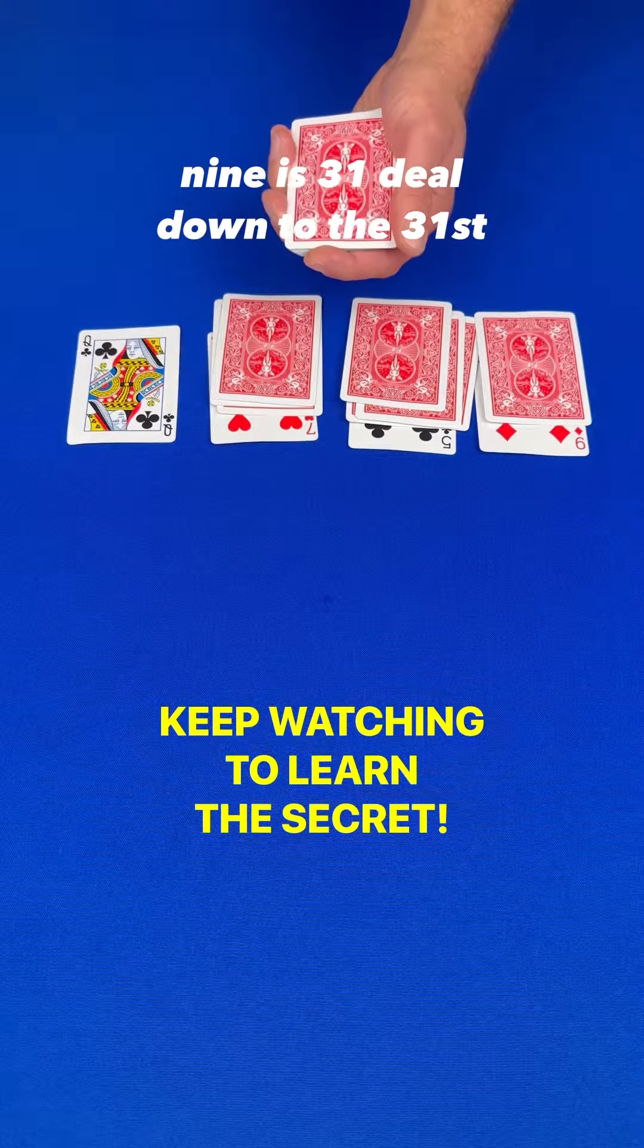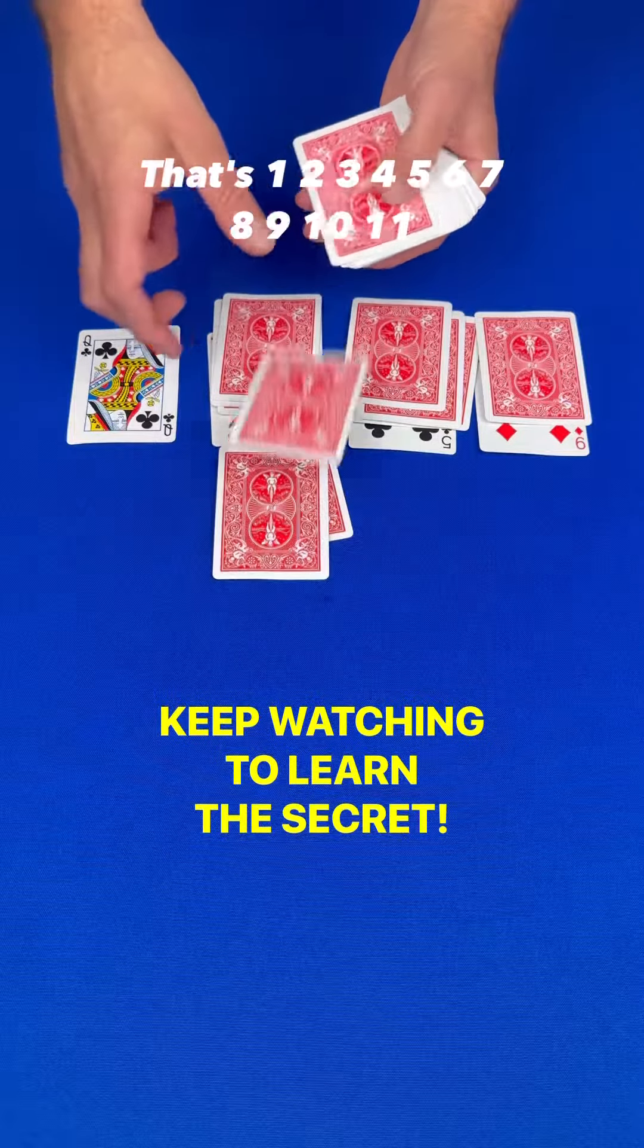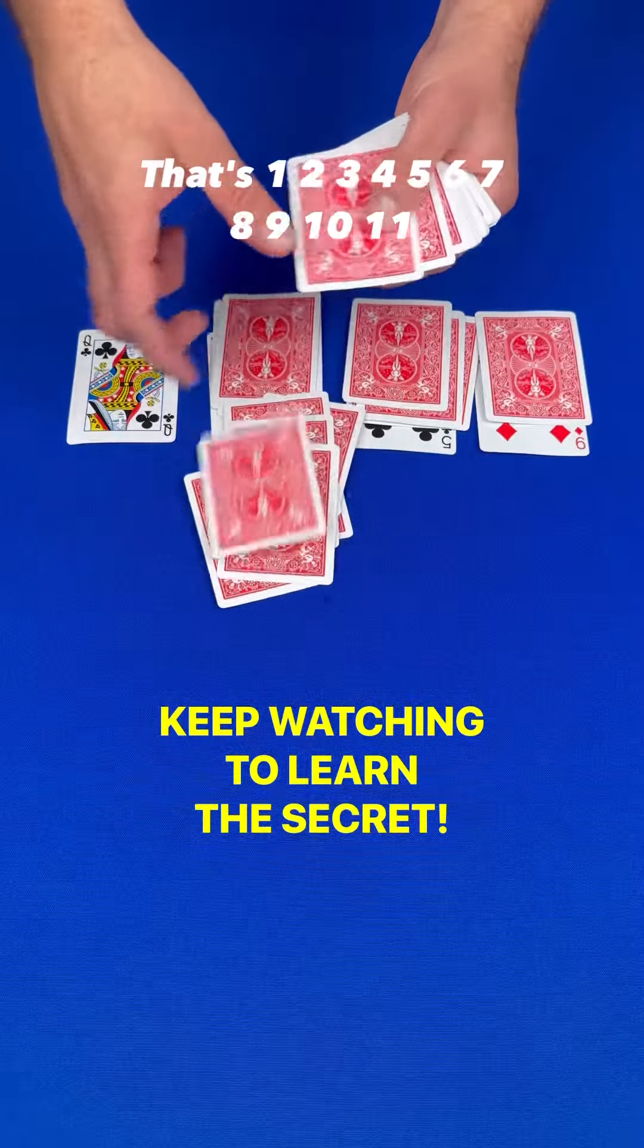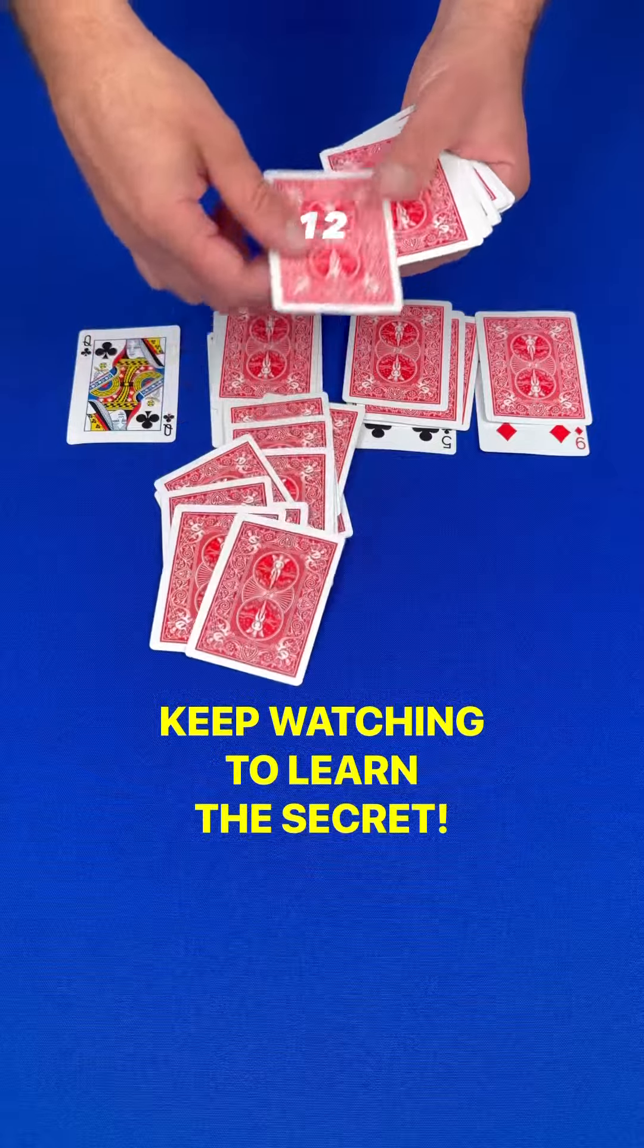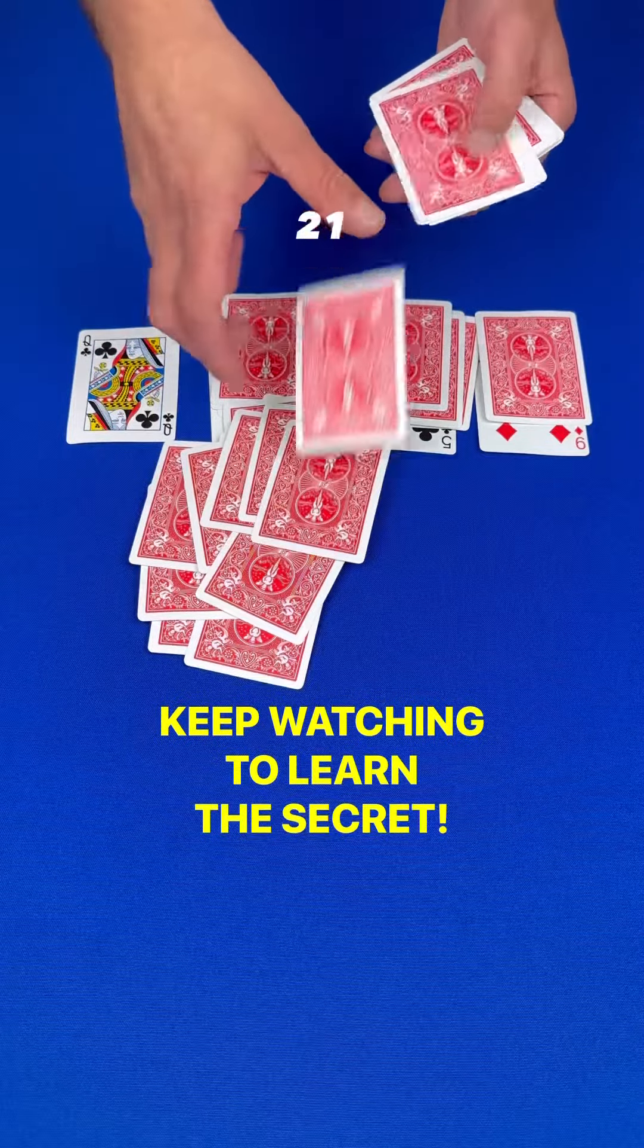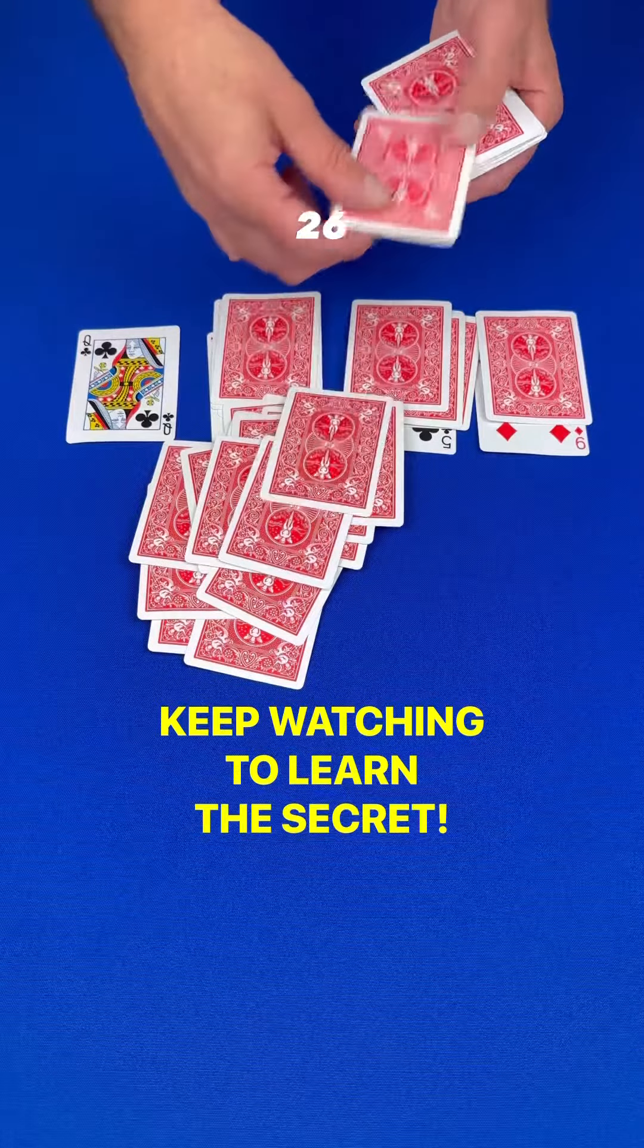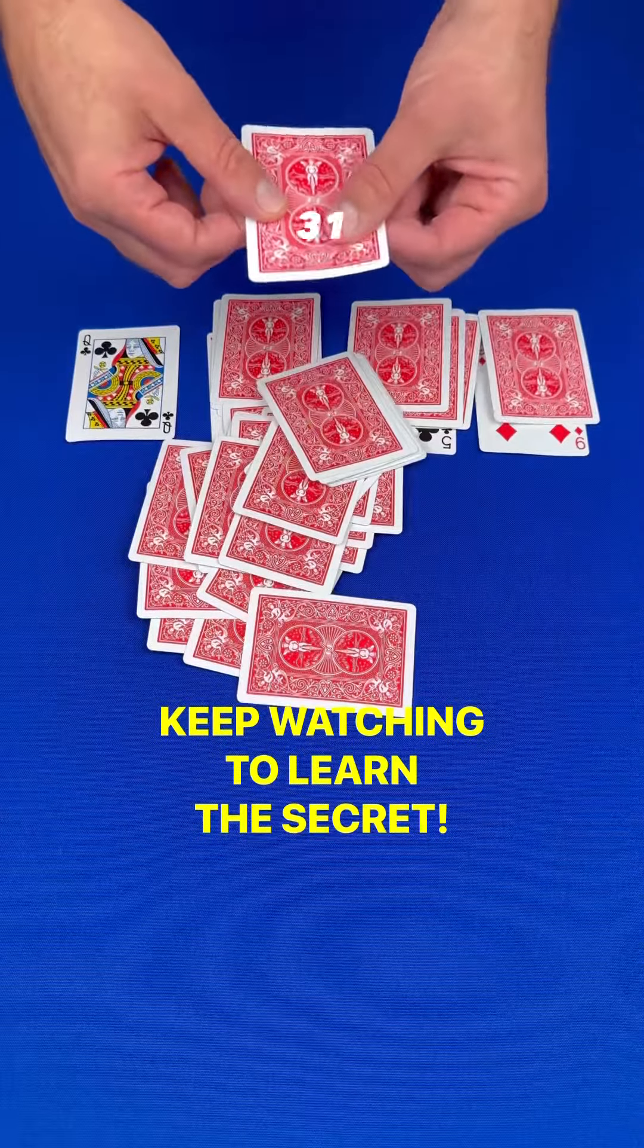Deal down to the 31st card. That's 1, 2, 3, 4, 5, 6, 7, 8, 9, 10, 11, 12, 13, 14, 15, 16, 17, 18, 19, 20, 21, 22, 23, 24, 25, 26, 27, 28, 29, 30, 31,